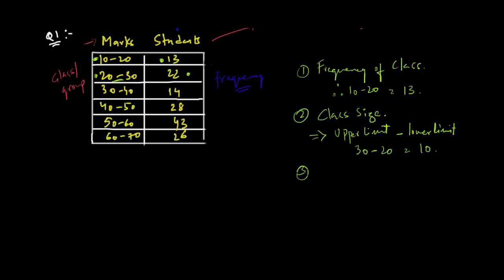Now, the third term that you will hear is total frequency. Now, we have read that this column over here, these are the frequency. Now, they are asking you the total of that frequency, meaning the sum. So, you simply add this value. So, that is 13 plus 22 plus 14 plus 28 plus 43 plus 26. So, the answer is 146. Therefore, the total frequency of this entire data set is 146.